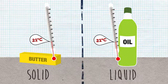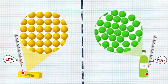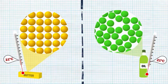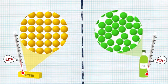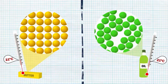Let's zoom into each substance to see what's happening. Here we can see that molecules in the butter and oil are both moving slowly. That's because they have the same average kinetic energy.